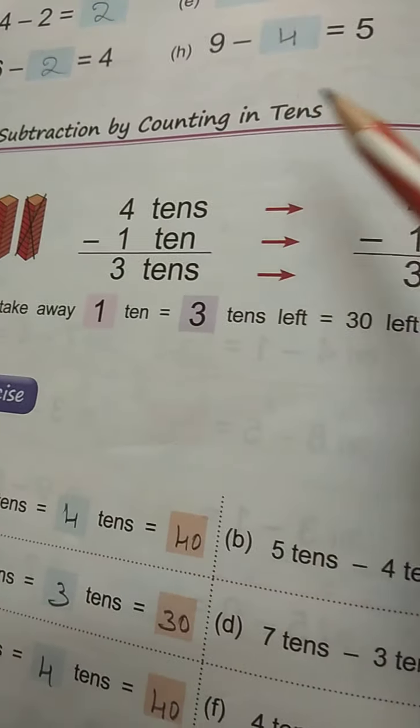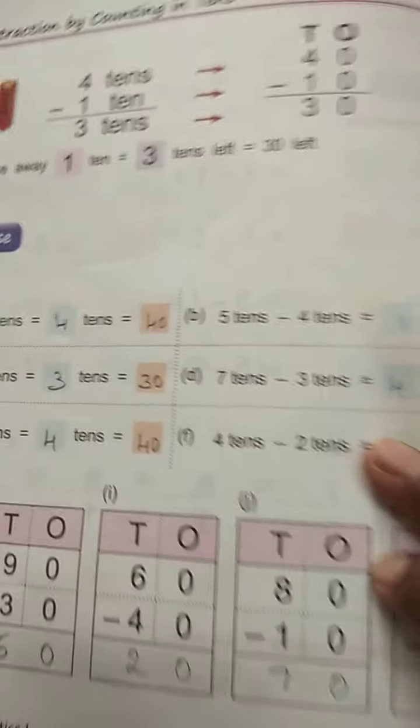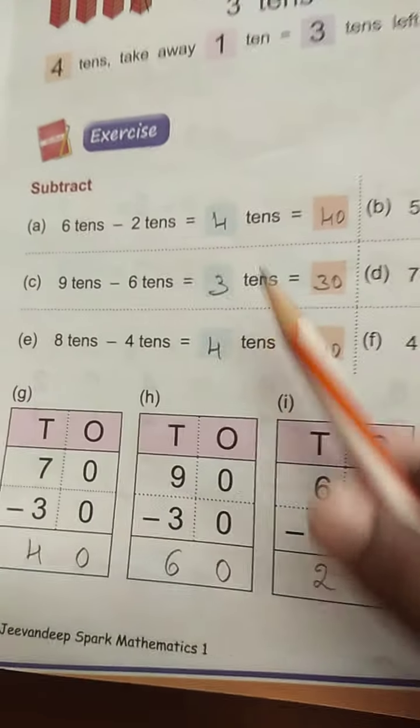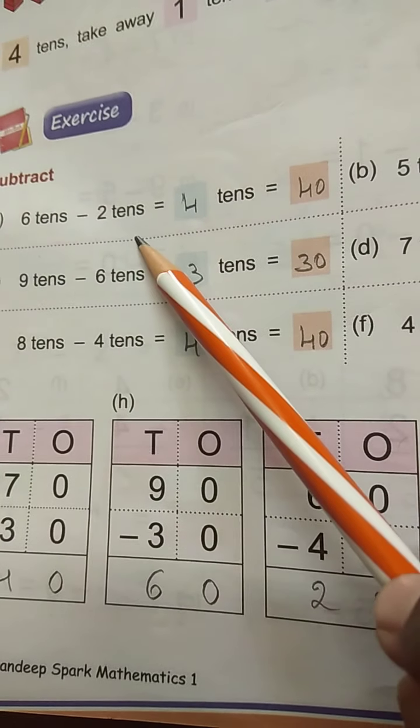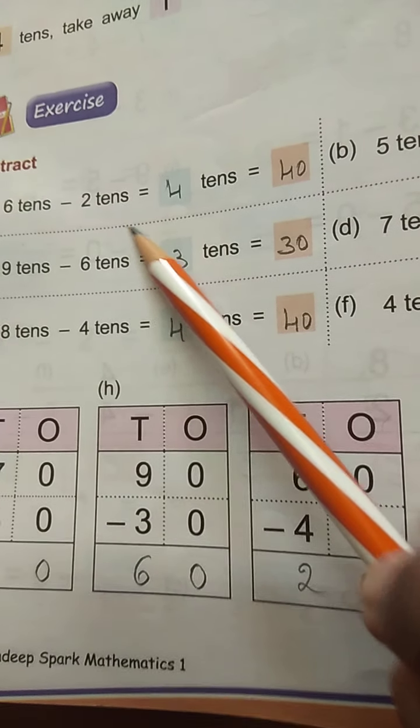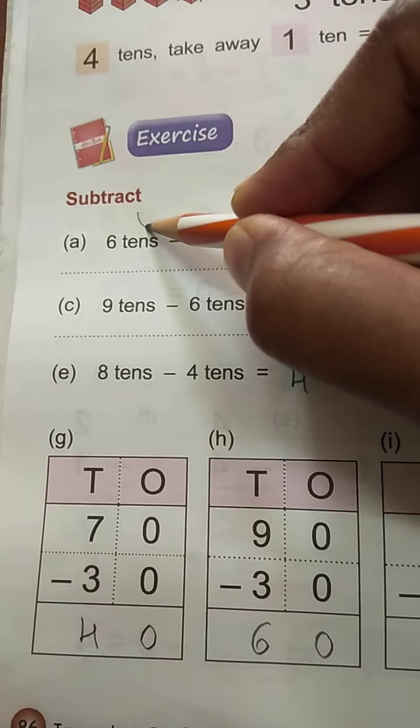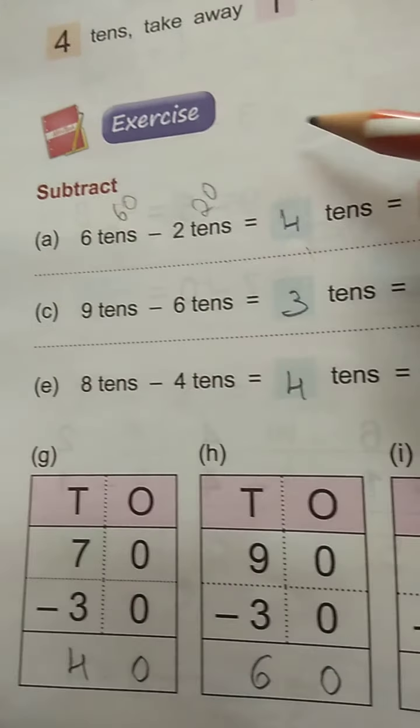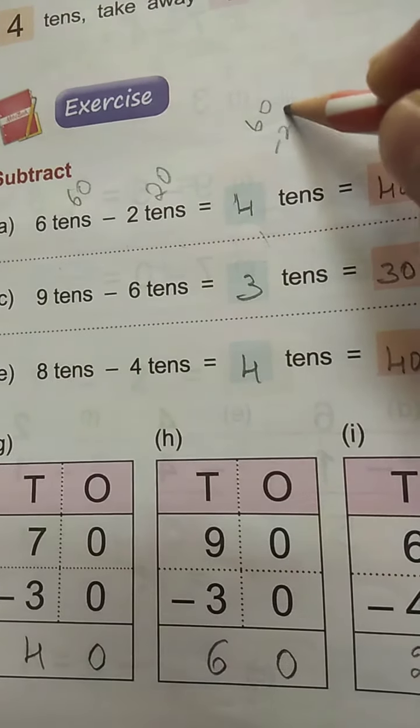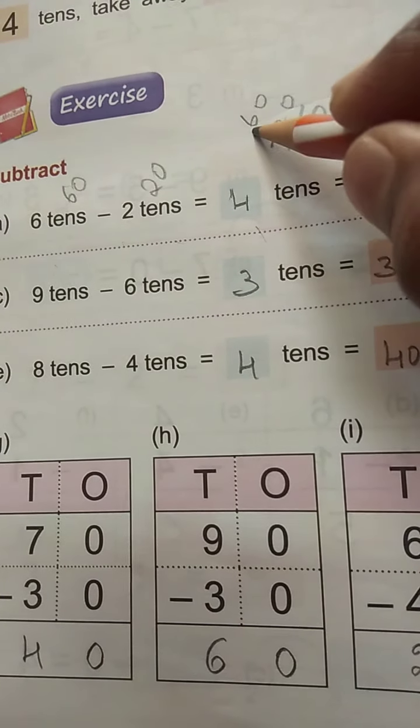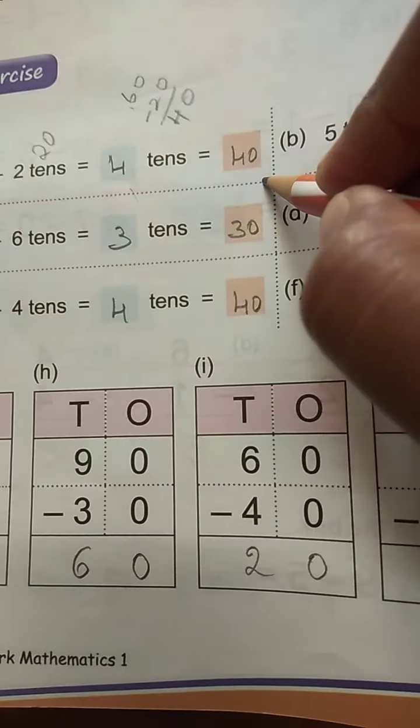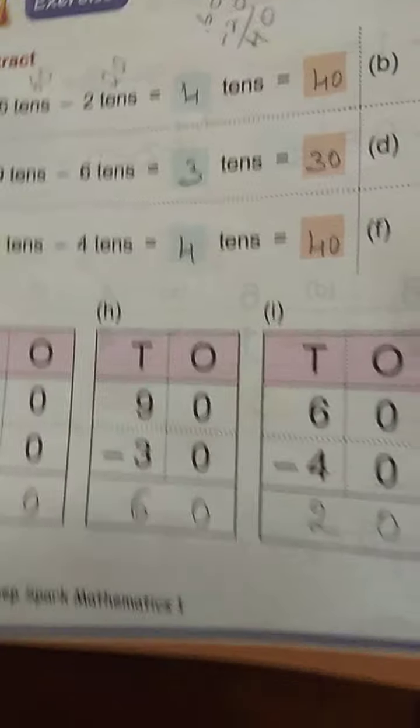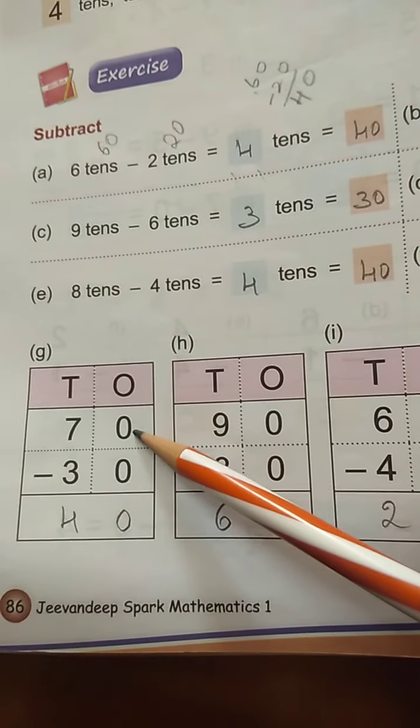Next. Subtraction by counting in tens. So 2 digit numbers come here. So we will start. So exercise: 6 tens minus 2 tens, that is 4 tens. 6 tens means 60. 2 tens means 20. So 60 minus 20. 0 minus 0 is 0. 6 minus 2 is 4. So 40 it is. Next.